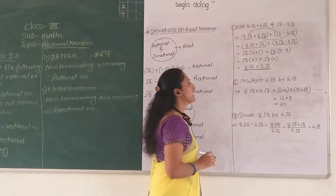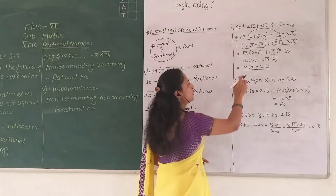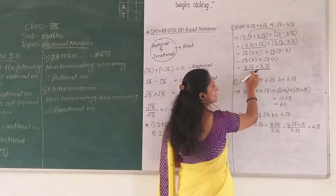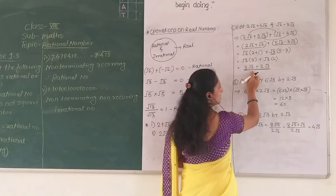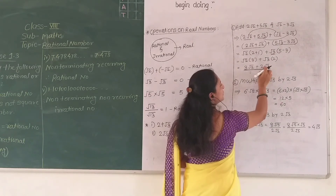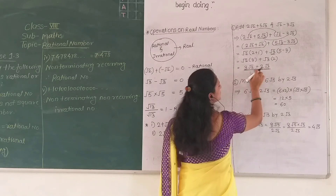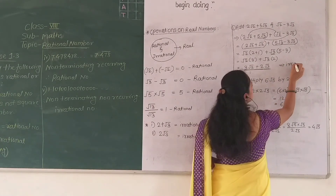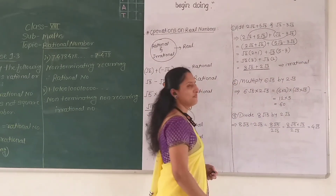Now, is this number 3 root 2 plus 2 root 3 rational or irrational? Root 2 is irrational, so 3 times root 2 is also irrational. Root 3 is irrational, so 2 times root 3 is also irrational. And the addition of these two irrational numbers gives an irrational number. So 3 root 2 plus 2 root 3 is an irrational number.